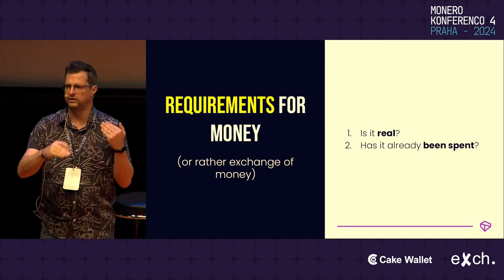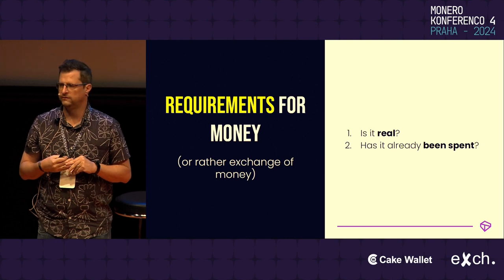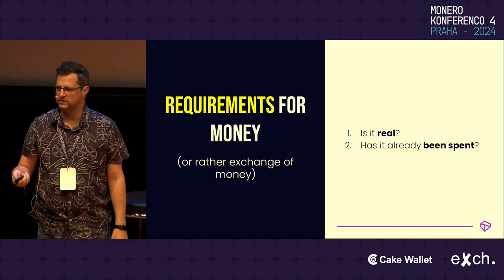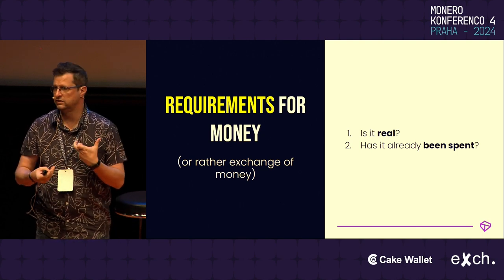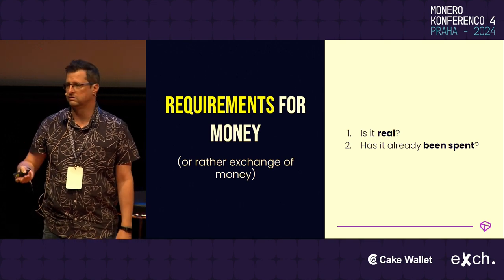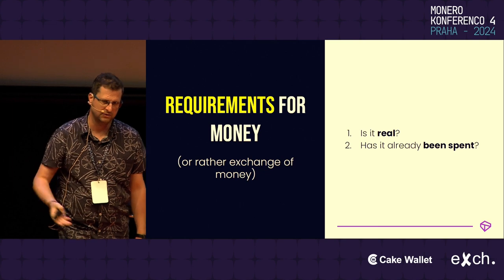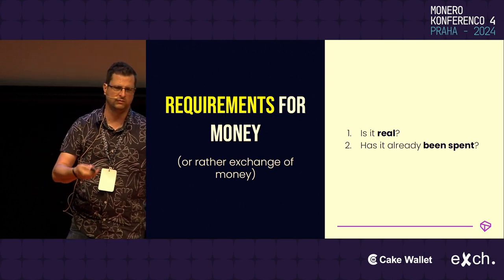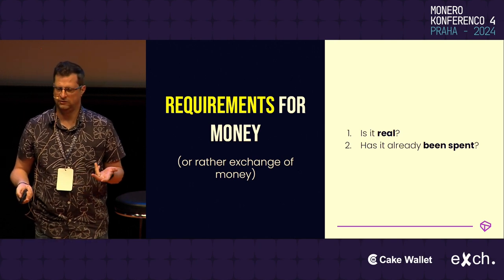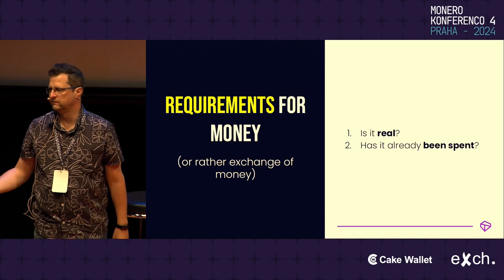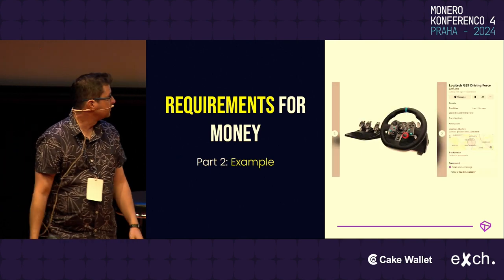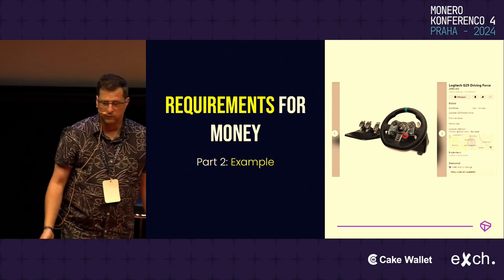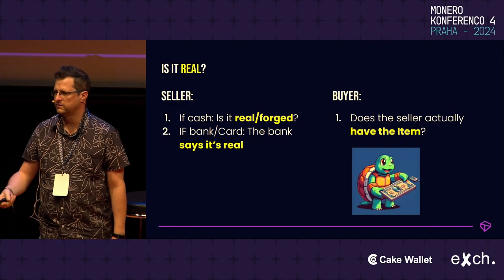Before we go into the different levels, I want to take a step back and look at what is the requirement for money. If I'm going to be exchanging money with someone, the two tests I always think about are: is it real? And has it been spent? If you've got an idea for building something on the blockchain, I like this as the test of whether it should be on the blockchain or some other application. Here's an example — a Facebook ad where someone's selling a gaming driving wheel for 5,000 South African rand. These are the things we'd be checking, right? Is it real?